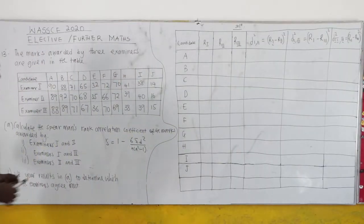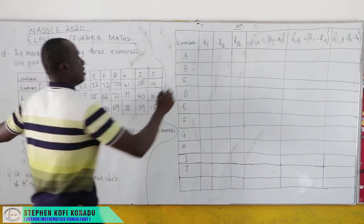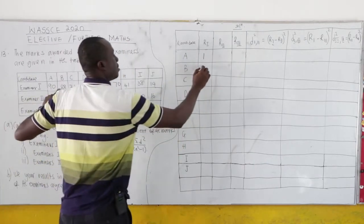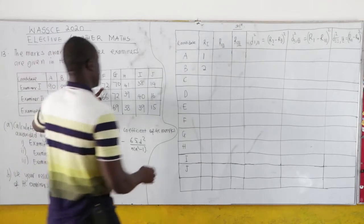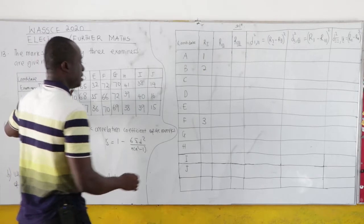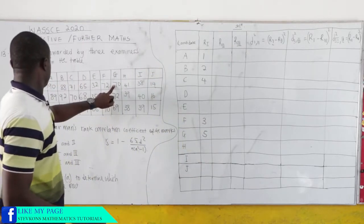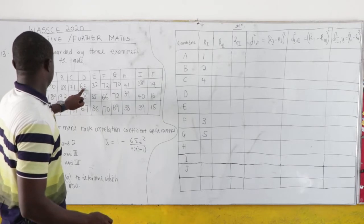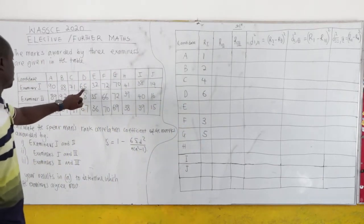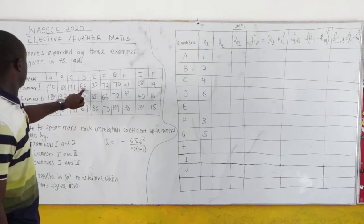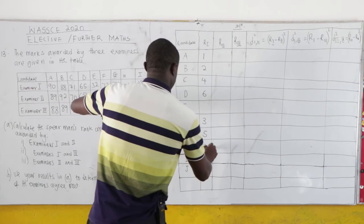Let's rank the marks for examiner 1. The highest mark is 90, so that candidate is ranked 1st, followed by 88 which is ranked 2nd. Then 72 — candidate F is 3rd, 71 — candidate C is 4th, 70 — candidate G is 5th, and 65 — candidate D is 6th.